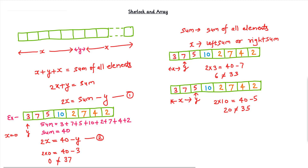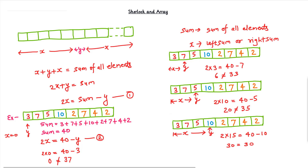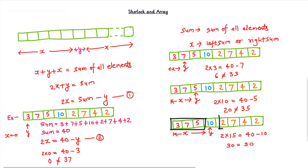So again we move ahead and check the next element. Now y is 10 and x will be 3 plus 7 plus 5 which equals 15. Putting x equals 15 and y equals 10 inside equation 2, we get 30 on the LHS and 30 on the RHS. Both are equal! So this is the element we were looking for — there exists an element inside the array where the sum of all elements to the left side equals the sum of all elements to the right side.